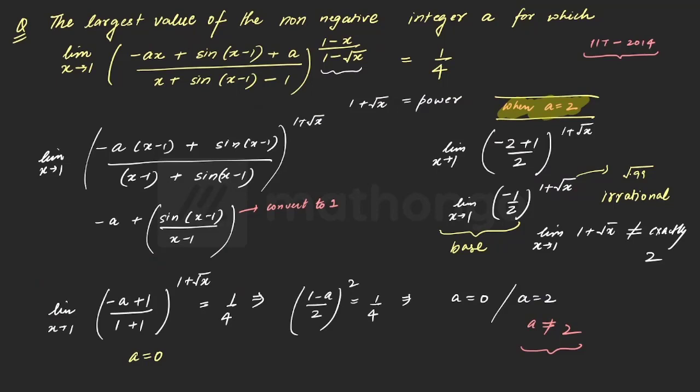So that means the only answer that is left with us is a equal to 0. But will it be an answer? First of all, let's go back and check. Yes, it is going to be an answer. Why? Because agar main a equal to 0 daalta hoon, base mera kaisa ho gaya? Base mera positive ban raha hai. Agar base positive ban raha hai, then I do not have an issue.